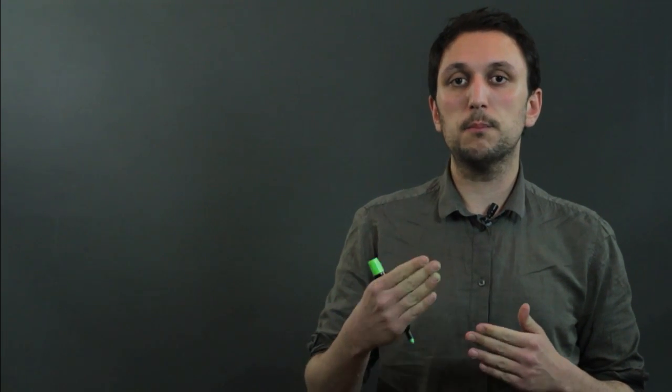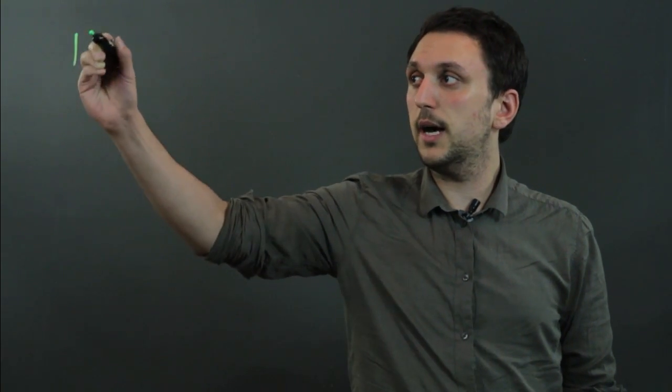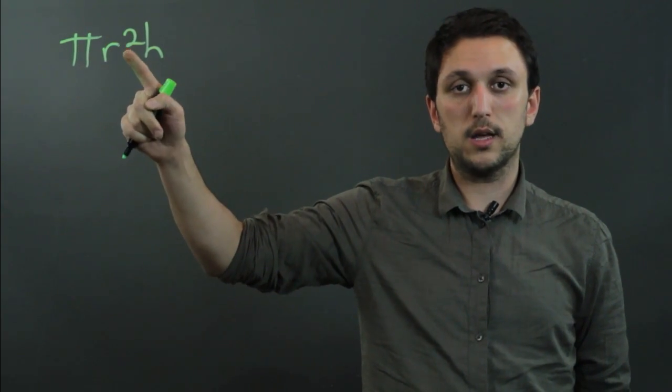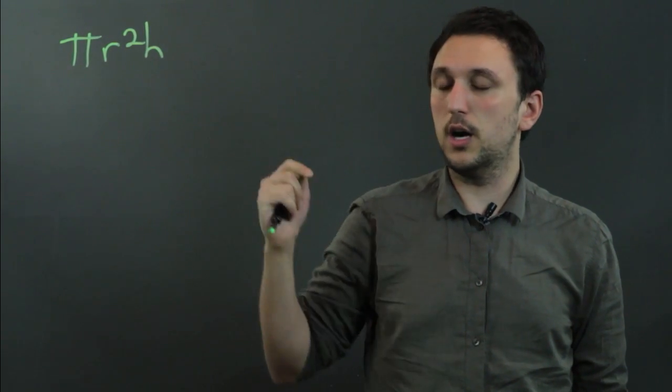Now, a cylinder is a three-dimensional object, and a gallon is the measurement of the volume of a three-dimensional object. If you have a cylinder, the way you find the volume is pi r squared h, where r is the radius of the base circle and h is the height.